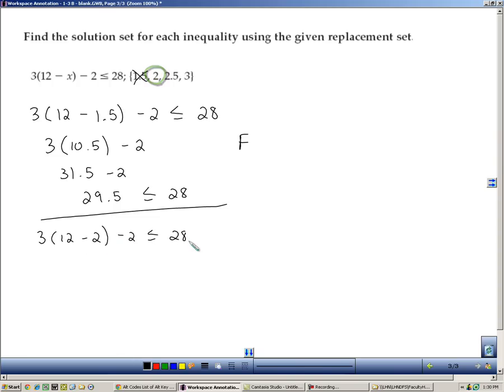And now we'll plug 2 in. 3 times 10 minus 2. That's a 30 minus 2. That's a 28. Is 28 less than or equal to 28? Well, it's not less than, but it is equal to. And this little bar underneath says equal to is okay. So we say that that one's going to work.